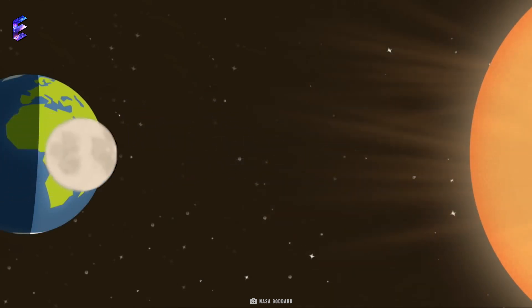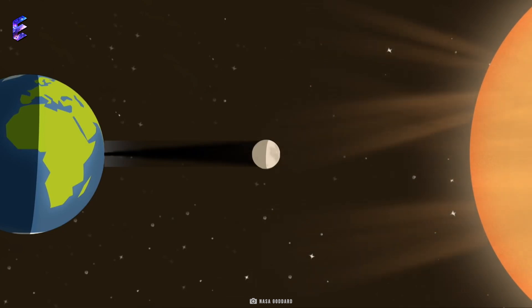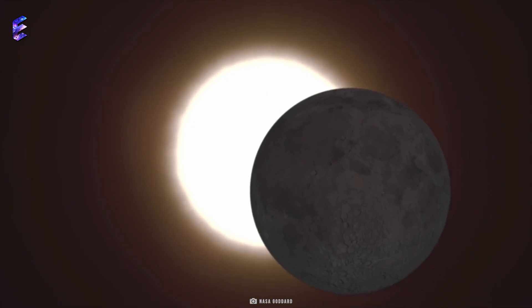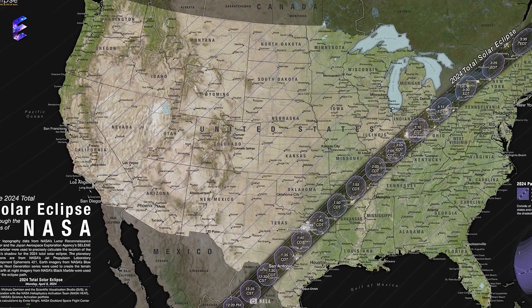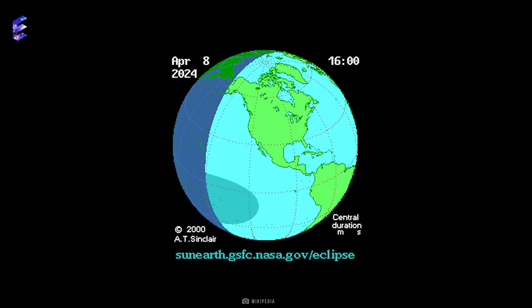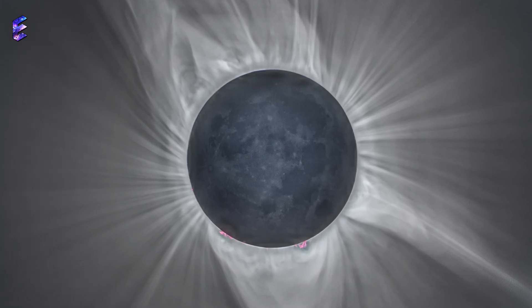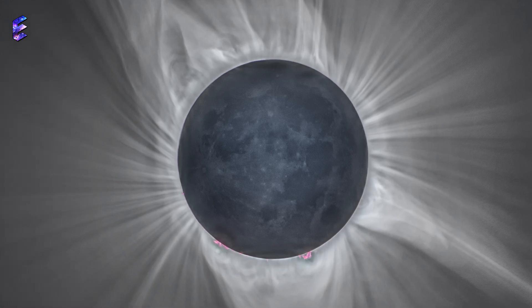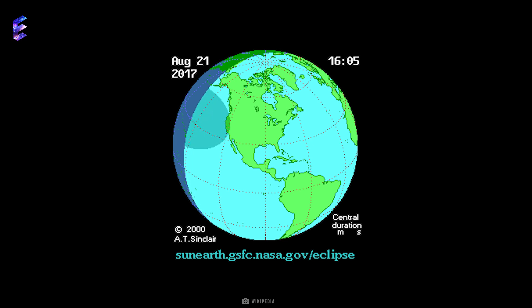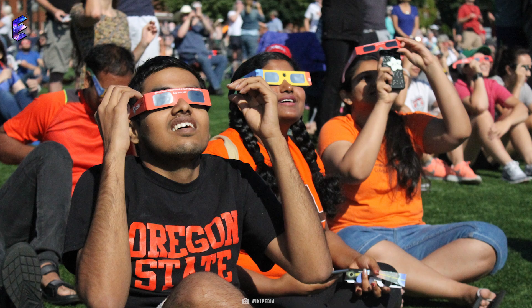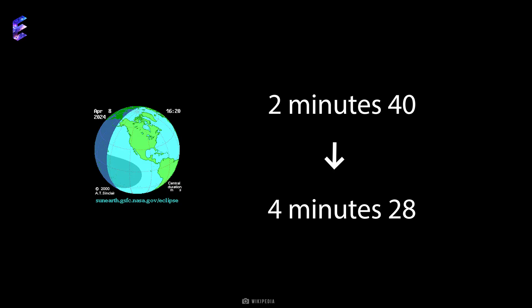The Great American Eclipse of April 8, 2024 is a total solar eclipse. It will be the only total solar eclipse of the 21st century where the totality will be visible from Mexico, the United States, as well as Canada. This eclipse will have a maximum duration of 4 minutes 28 seconds. The last total solar eclipse visible from most of North America occurred in August 2017 and lasted a total of 2 minutes 40 seconds. So everyone is in for a bigger treat this time around, with the total eclipse time being nearly double of the 2017 one.